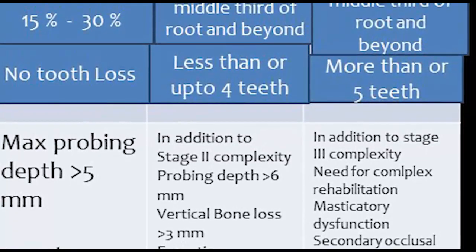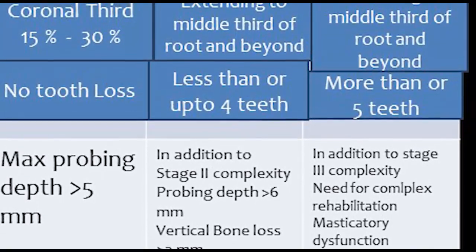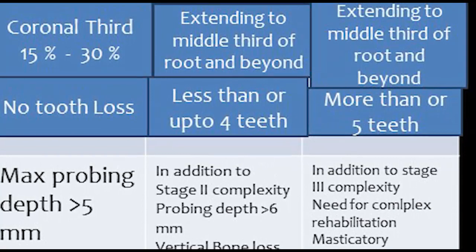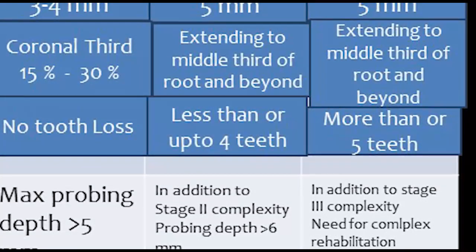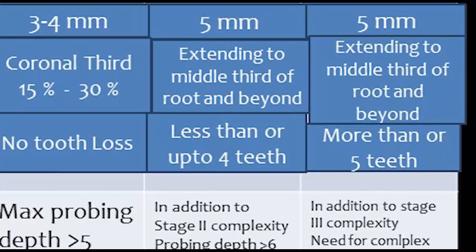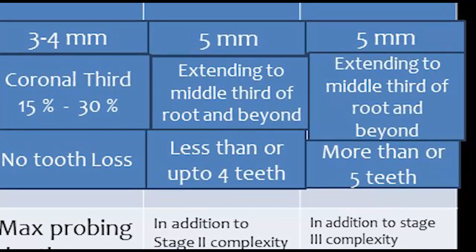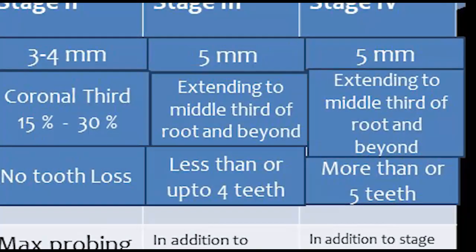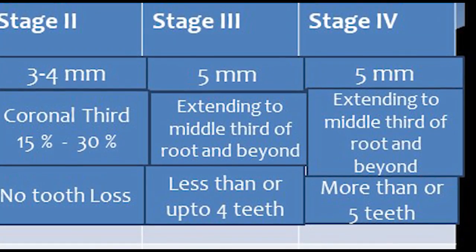For Stage 3, the furcation involvement will be Class 2 or Class 3, and there can be moderate ridge defects. To summarize Stage 3: CAL 5 mm, RBL extending to the middle third of the root and beyond, tooth loss up to or less than 4 teeth. In addition to Stage 2 criteria: probing depth greater than 6 mm, vertical bone loss greater than 3 mm, furcation involvement Class 2 or 3, and moderate ridge defects.